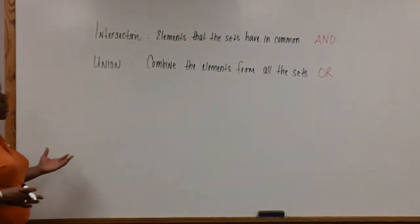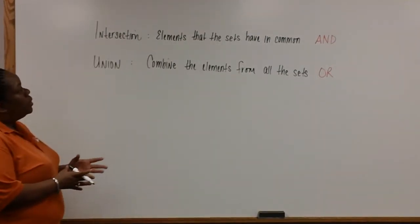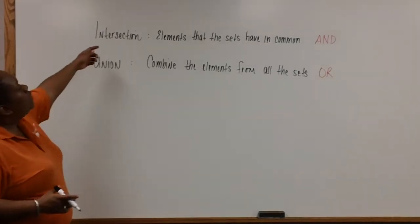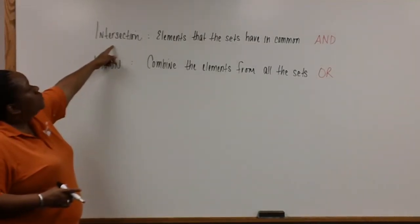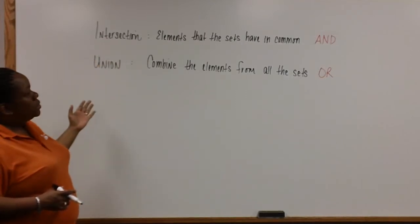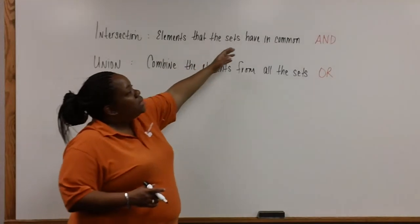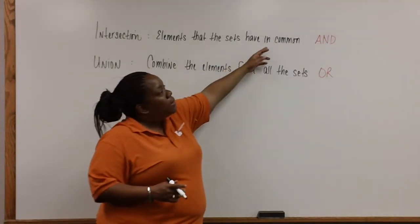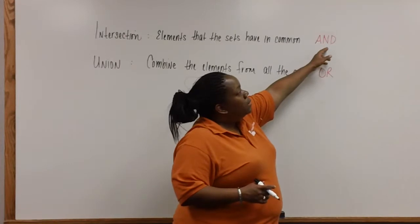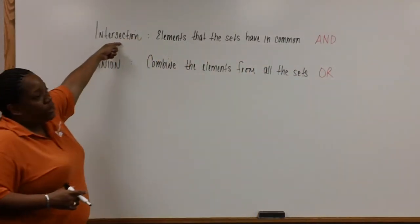There are two terms that you will have to be familiar with in section 8.2. The first term is intersection. The intersection of two sets consists of all the elements that the sets have in common. Also, the word 'and' is associated with intersection. That's very important.